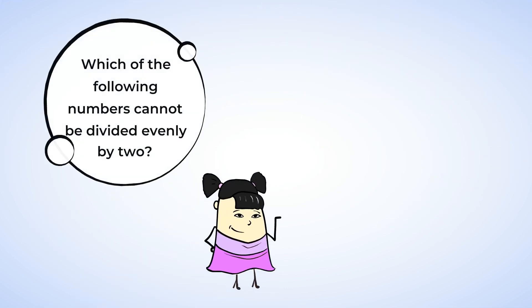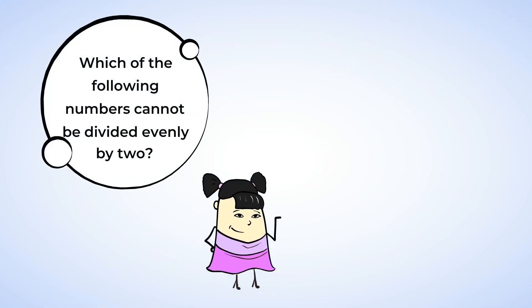Let's try this out. Which of the following numbers cannot be divided evenly by 2? 24, 798, 825, 702. 24 ends in 4, so that's even and can be divided by 2. 798 has an 8 as the last digit. That makes it even. Same goes with 702. It ends in 2, an even number again. 825 ends with a 5. Wait a second, that's not an even number. So 825 will have a remainder when it's divided by 2. There's the answer.